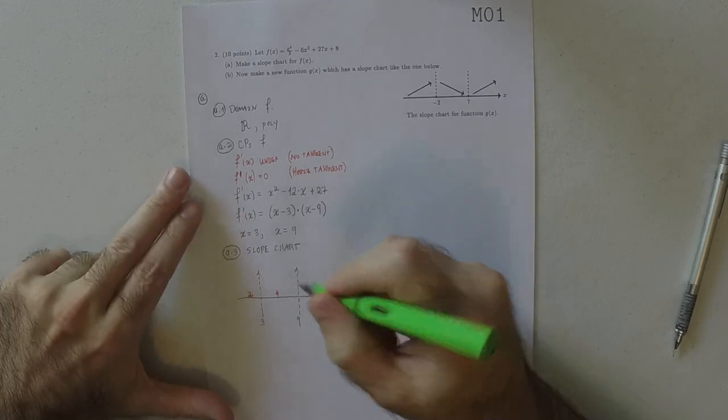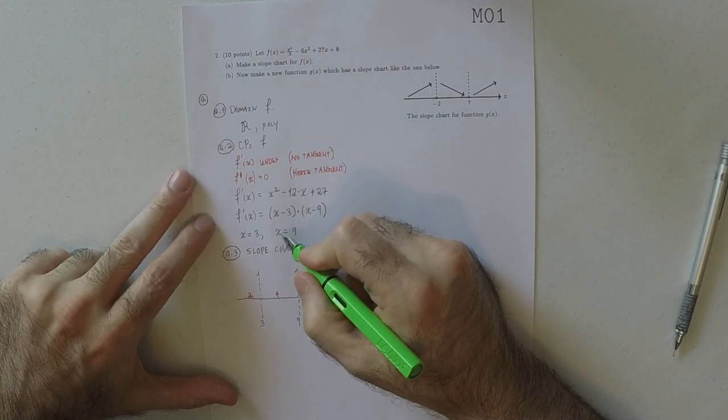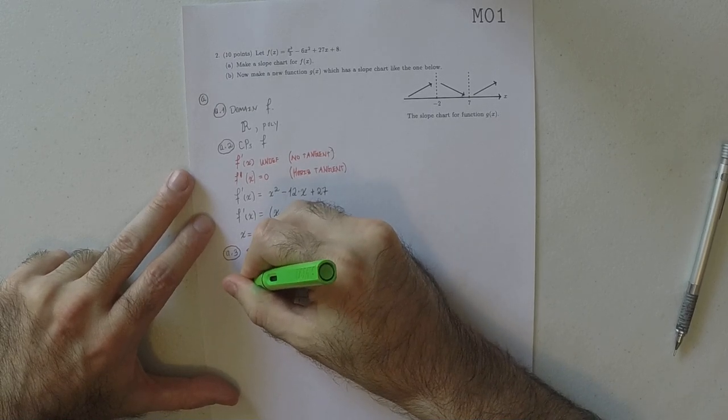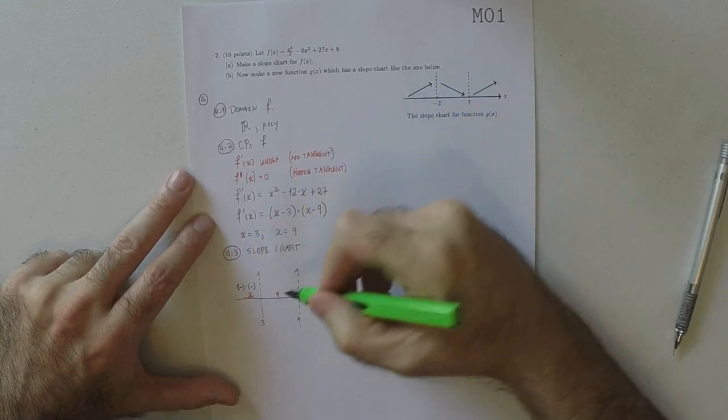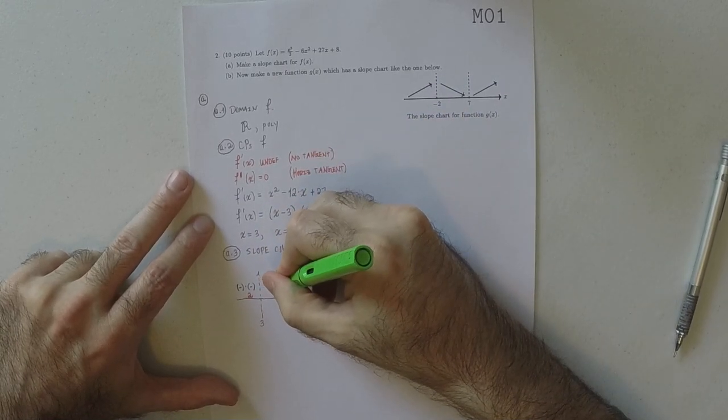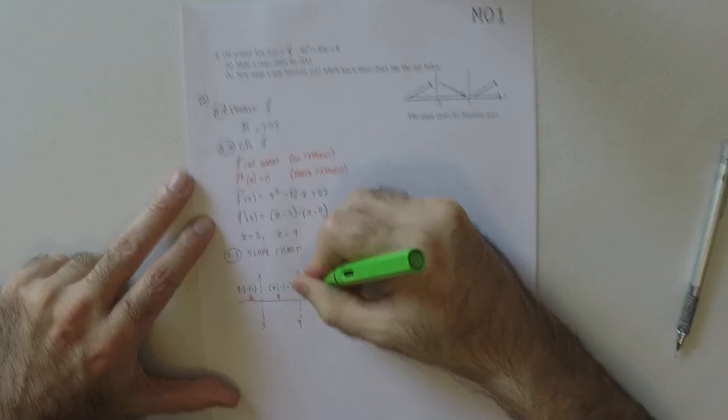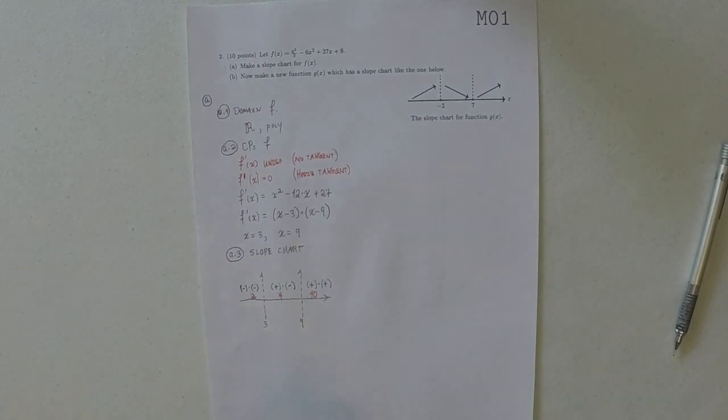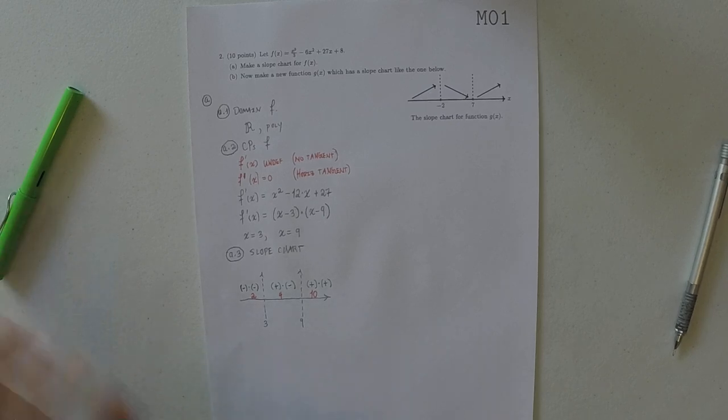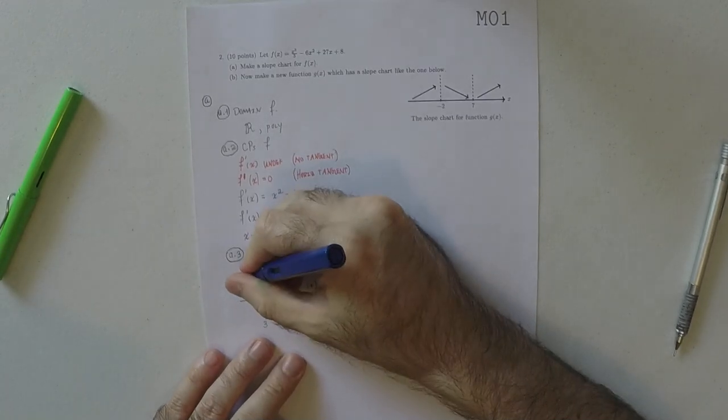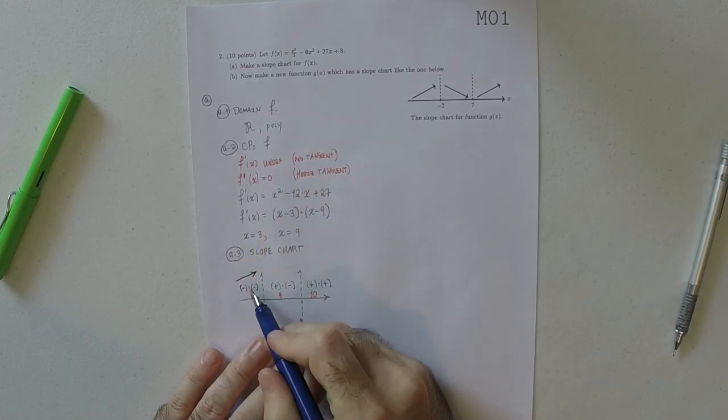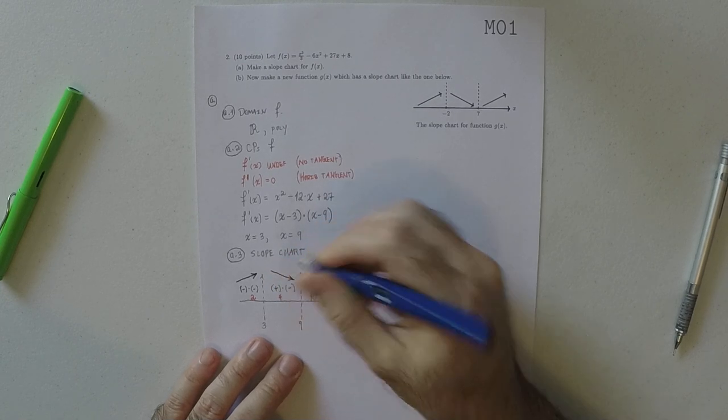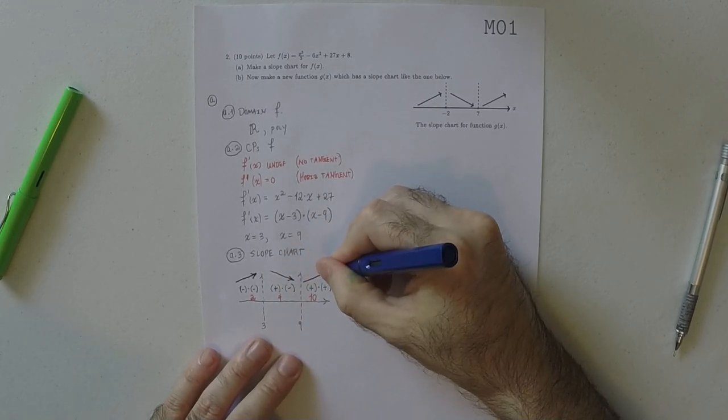Okay, so figuring out the sign pattern. The sign pattern, if you plug in 2, that would be negative and negative. Plugging in 4, that would be positive and negative. Plugging in 10, that would be positive and positive. So, the overall sign in the leftmost region, negative and negative is positive. So that means positive slope. And in the middle region, the overall sign is negative, so negative slope. And then positive slope in the rightmost region.